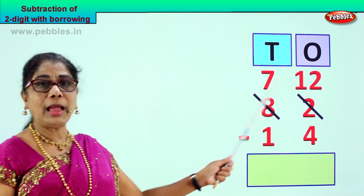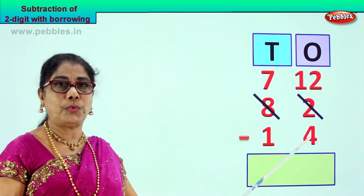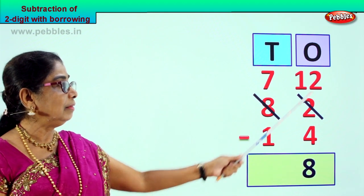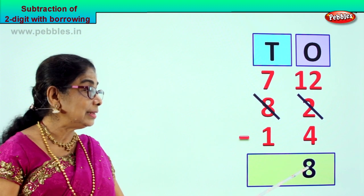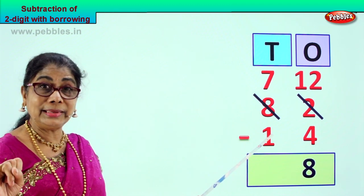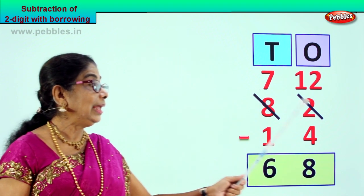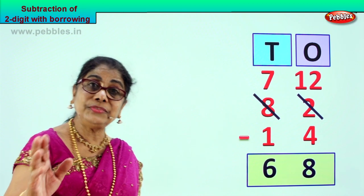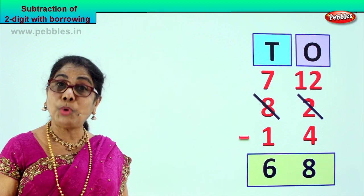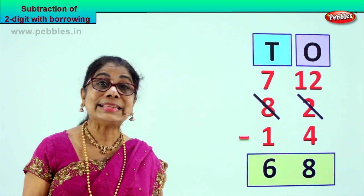Now we can borrow. After having borrowed, we will minus — from 12 you can take away 4. 12 minus 4 is 8. 12 take away 4 — your answer is 8. Here 7 minus 1 is 6. What is your answer? 7 minus 1 is 6. 82 minus 14 gives you the answer 68. 2 digit subtraction with borrowing — 82 minus 14 is 68.